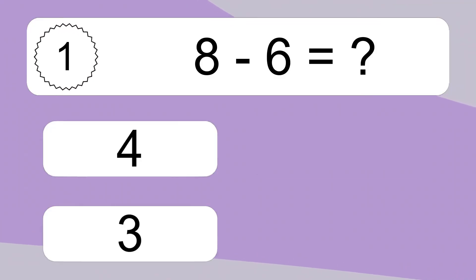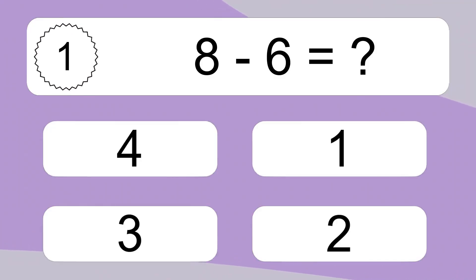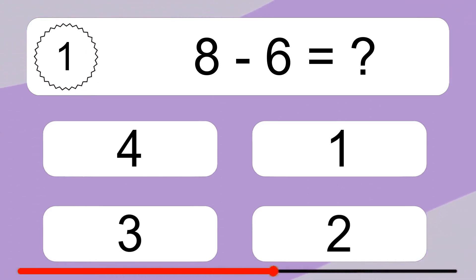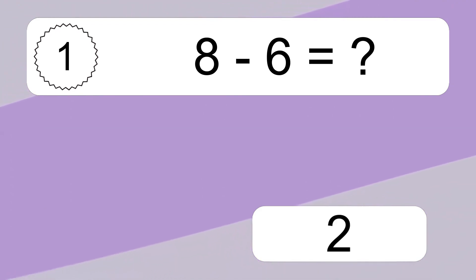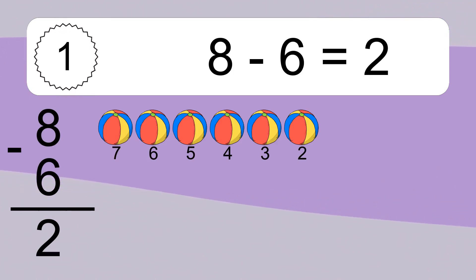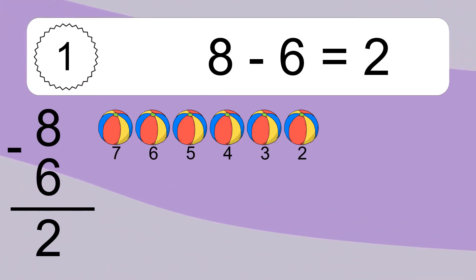8 minus 6 equals what? 8 minus 6 equals 2. Let's count it: 7, 6, 5, 4, 3, 2.